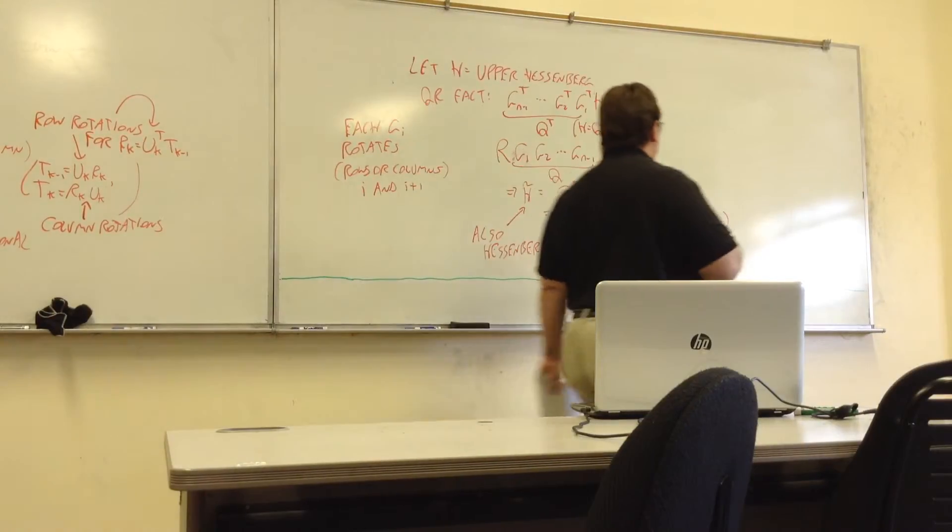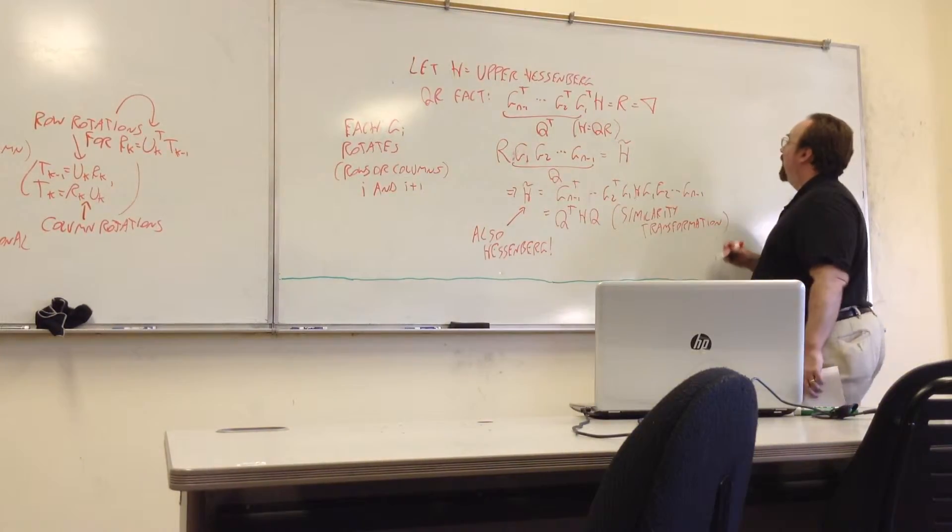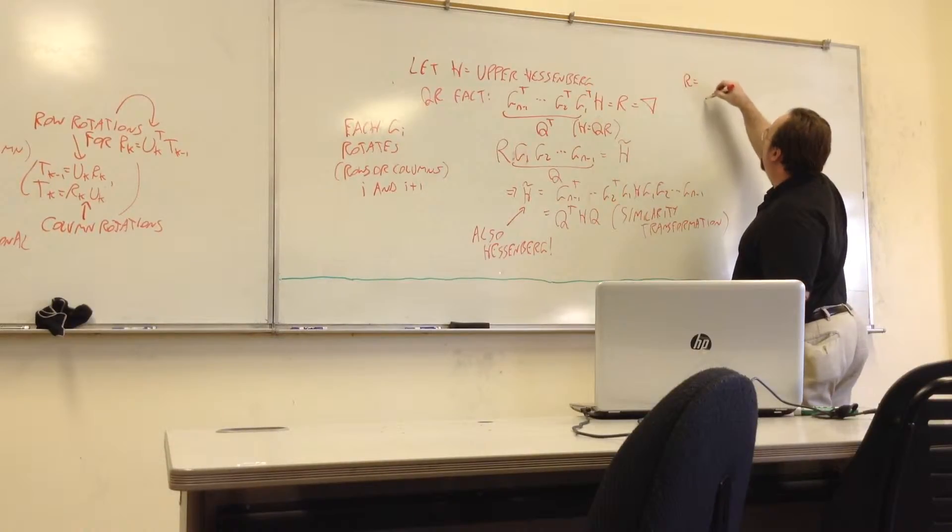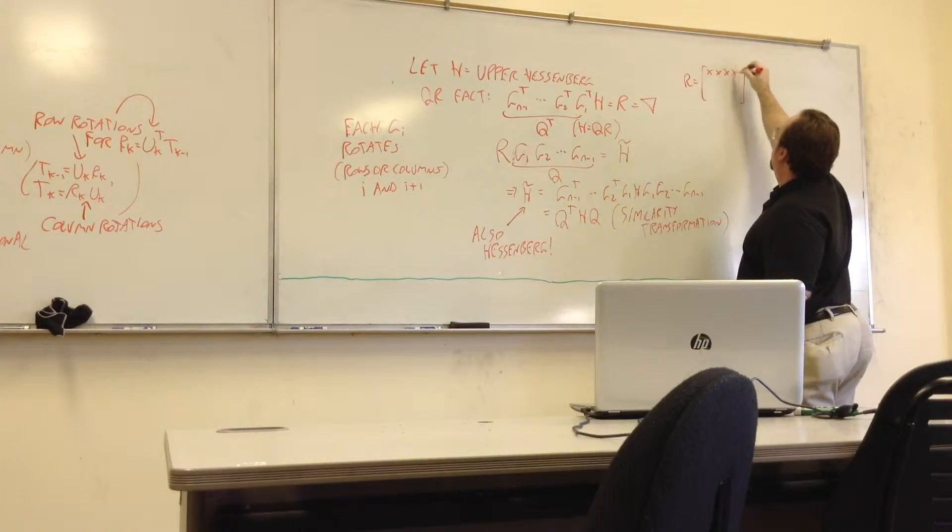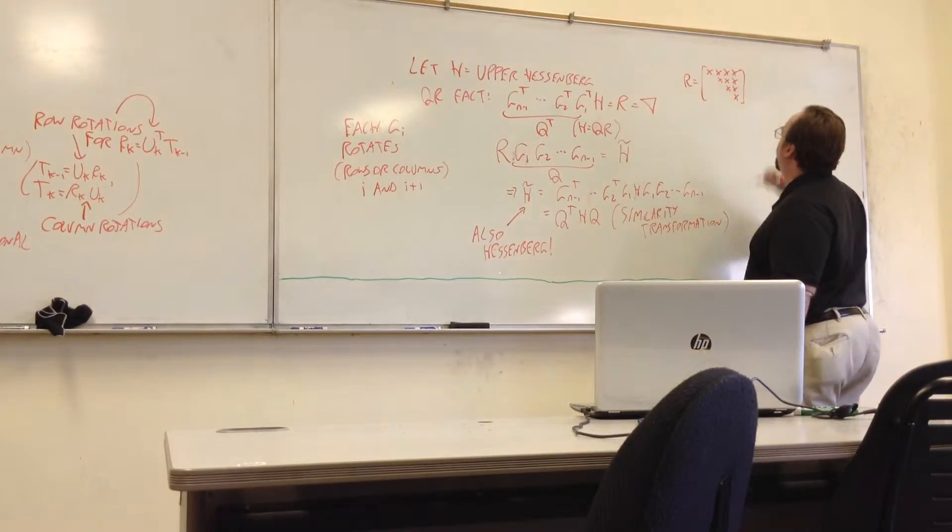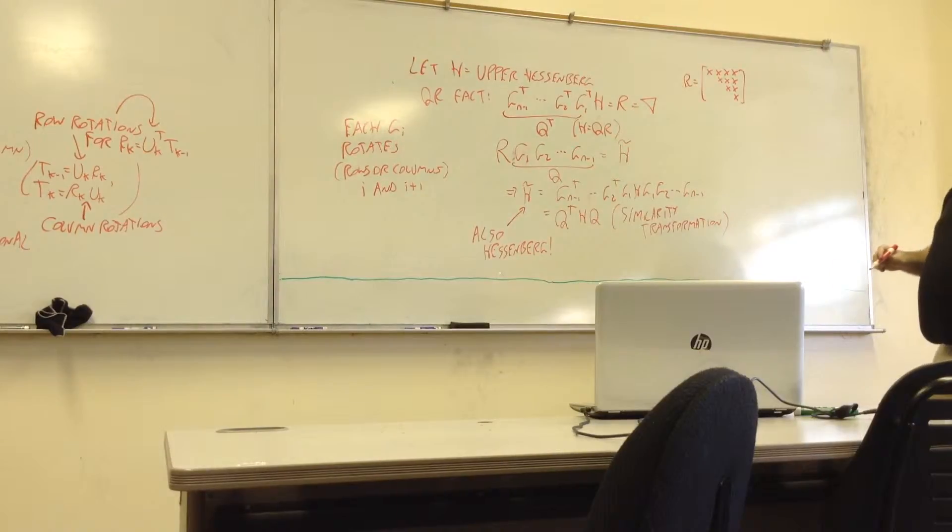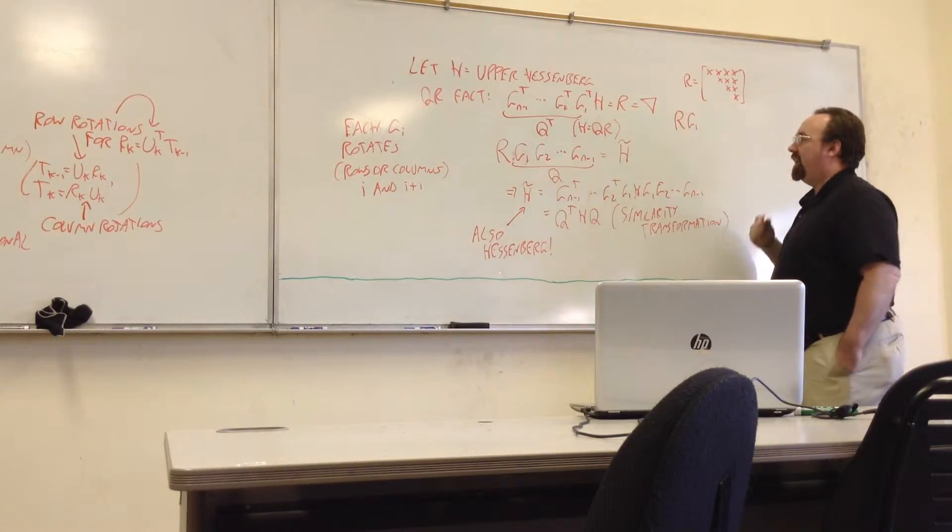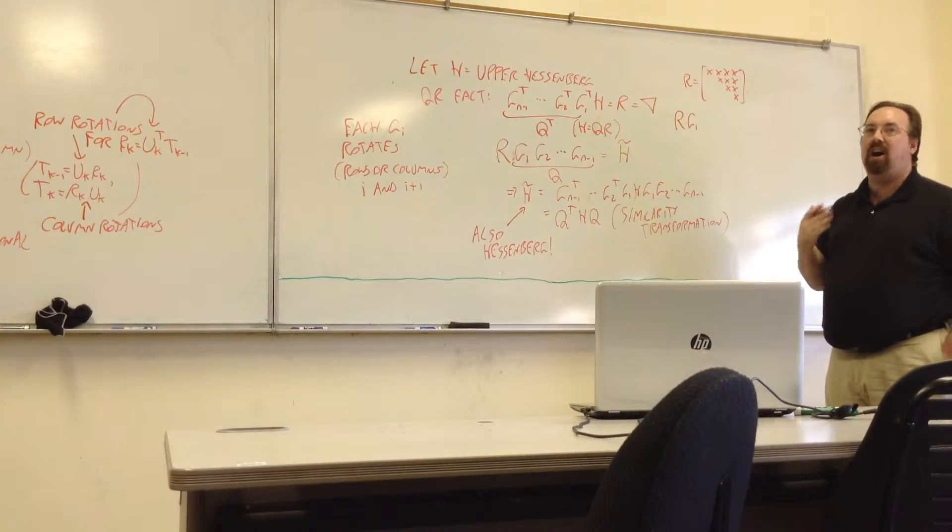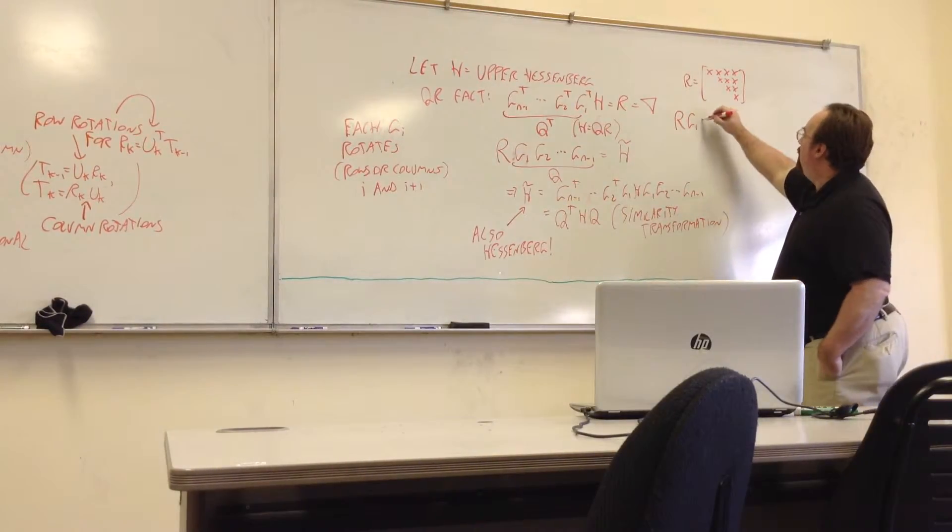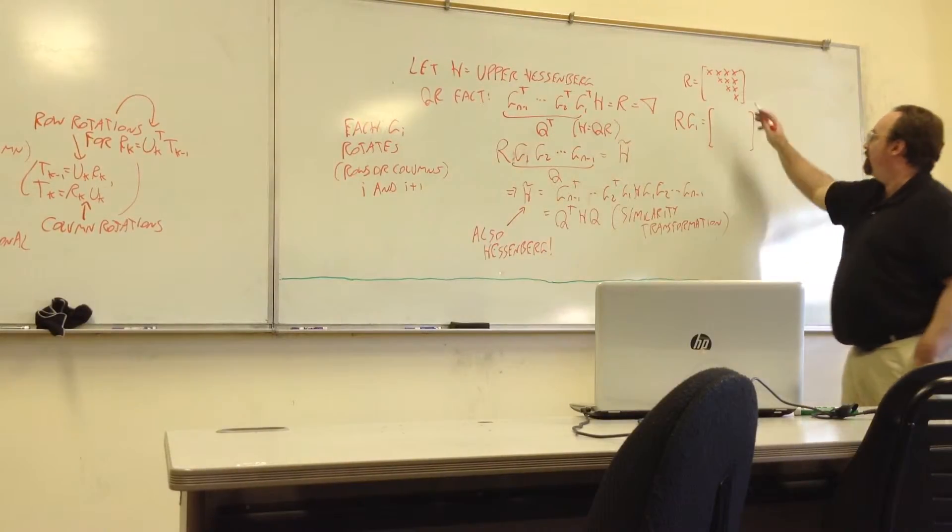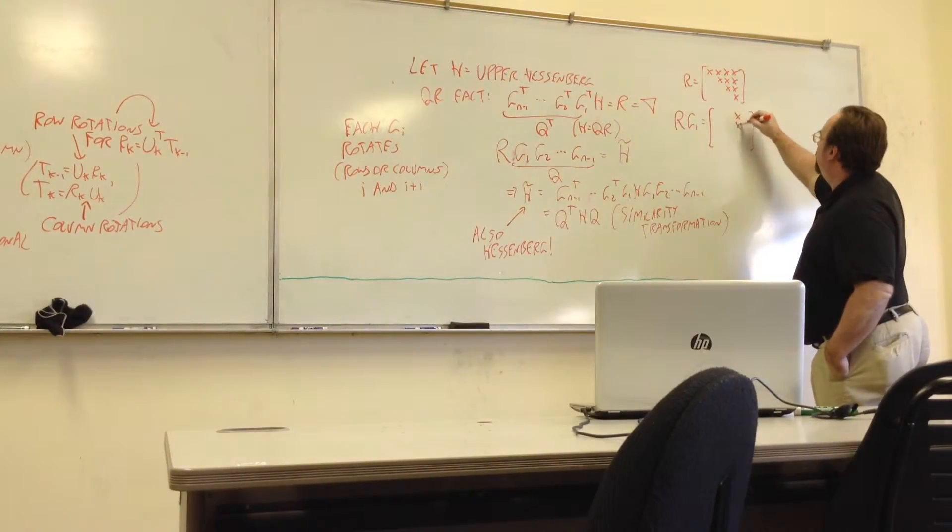So let's take a look at a small upper triangular matrix. I'll make a 4 by 4. So here we see where the non-zeros are. So now, I apply a Givens rotation on the right. So I'm rotating columns now. G1 affects columns 1 and 2 only. So columns 3 and 4 will stay the same. So I'll fill those in.